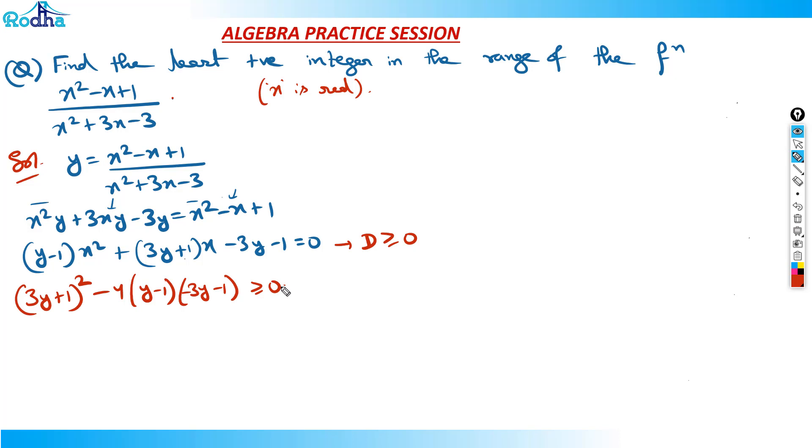You should be like b squared minus 4ac is greater than equal to 0. We just thought in terms of ax squared plus bx plus c equals 0. This whole minus 3y minus 1 is my c here.